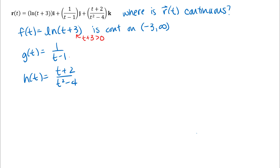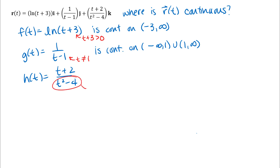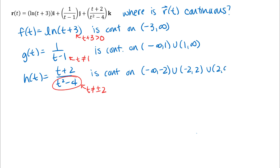For g(t), we need to avoid t equals 1 because that makes the denominator zero. So g(t) is continuous on negative infinity to 1 union 1 to infinity — excluding t equals 1. For the third component function h(t), we need to avoid t equals 2 and t equals negative 2. So h(t) is continuous on negative infinity to negative 2, union negative 2 to 2, union 2 to infinity.